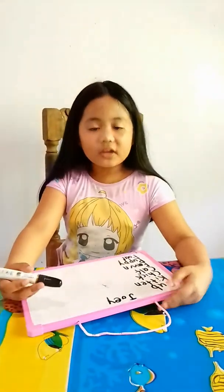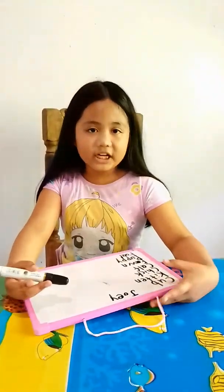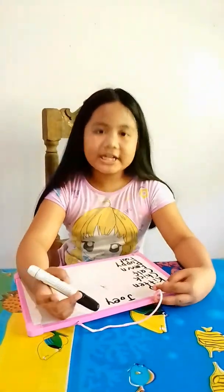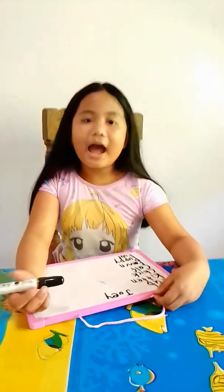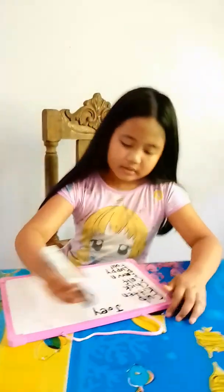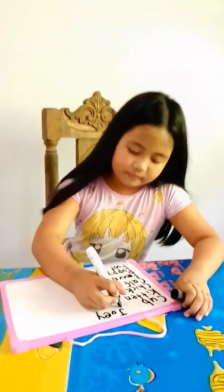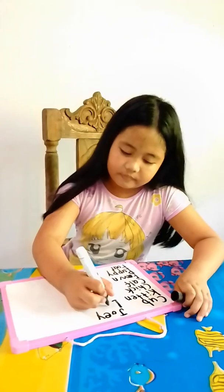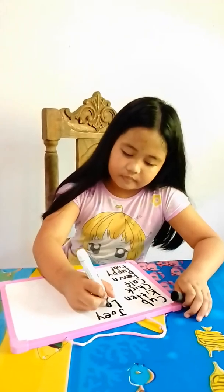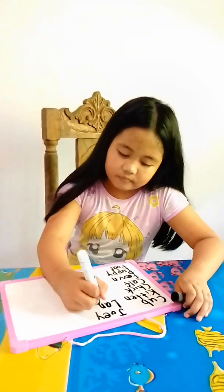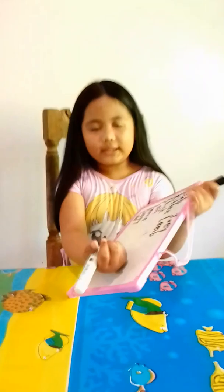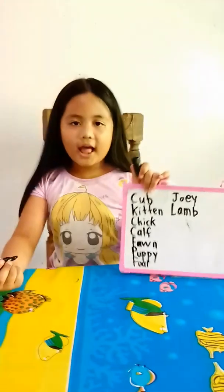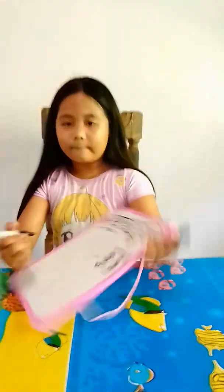What is the baby of a sheep? The baby of a sheep is a lamb. The spelling is L-A-M-B.